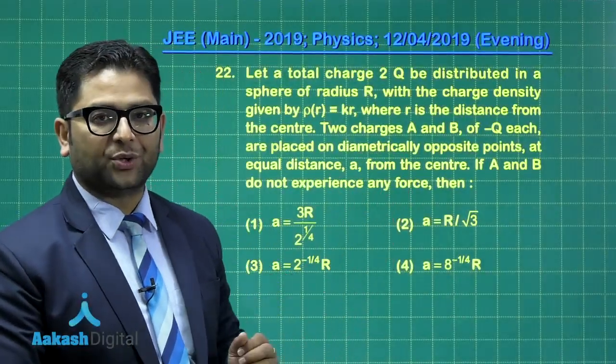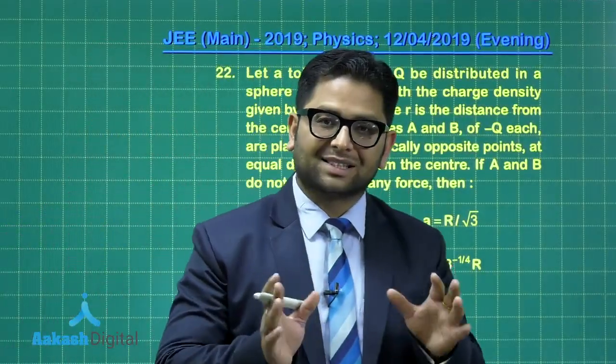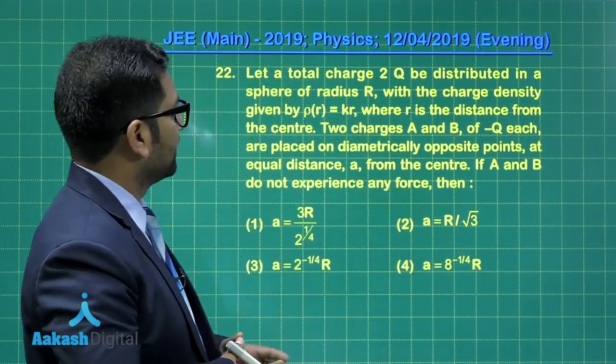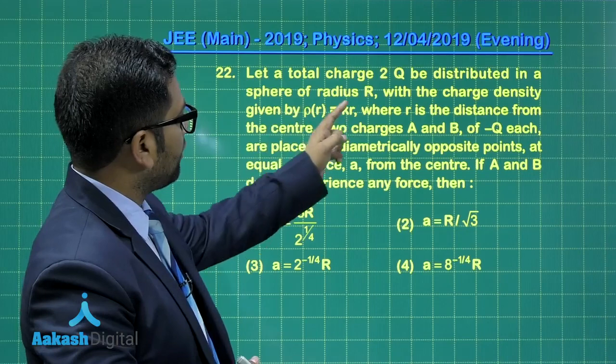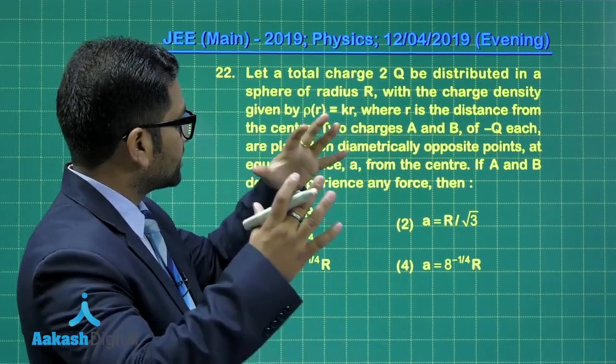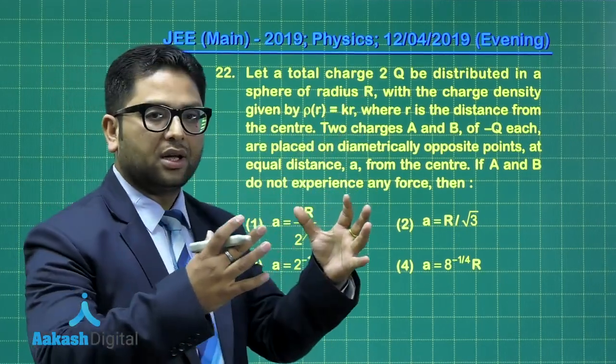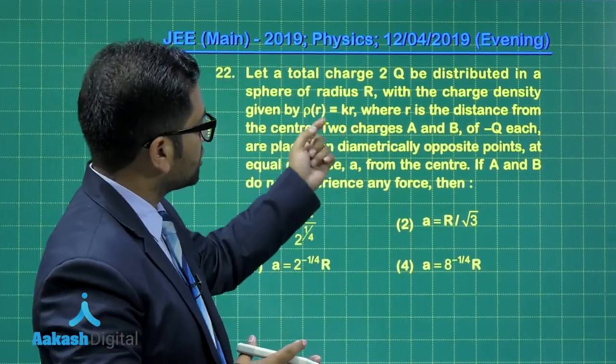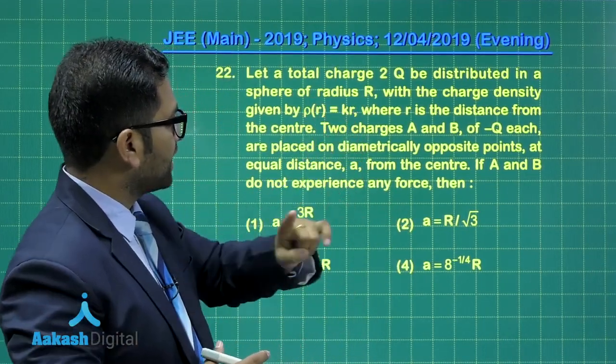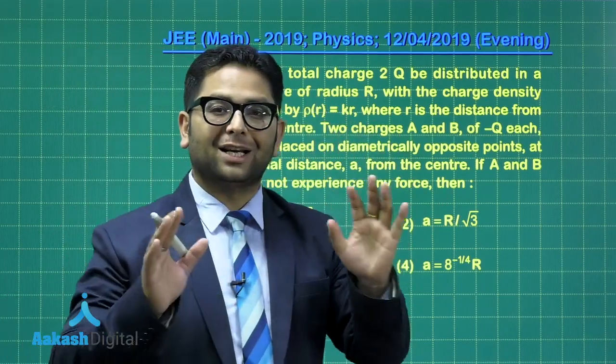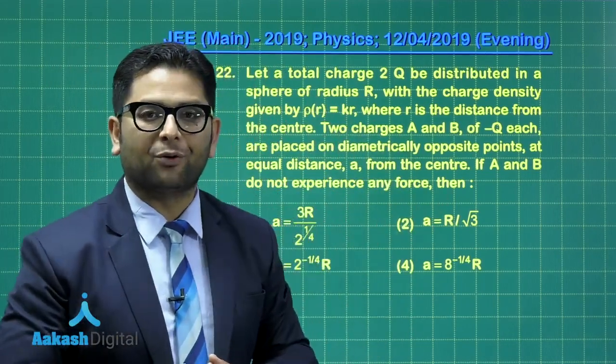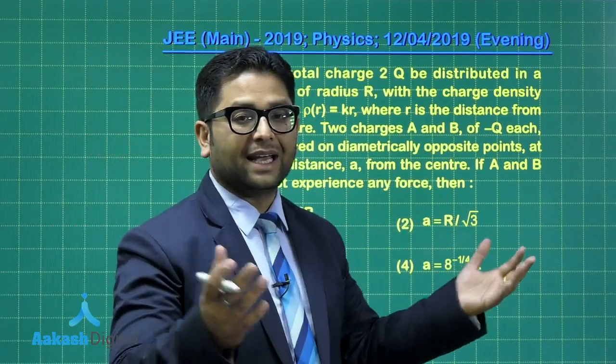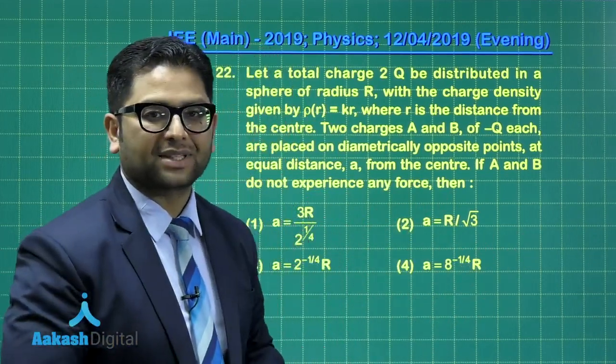Here I have question number 22, and it requires a skillful calculation drawn from electrostatics. You can see there is a sphere of radius R, and it has total charge 2Q, but the distribution is not uniform. It's a variable distribution with this given thing, and mind you, this k is not the general electrostatic constant 1 by 4 pi epsilon naught. Unless specified, we cannot take any k as 1 by 4 pi epsilon naught.